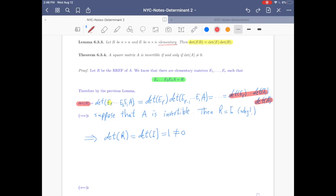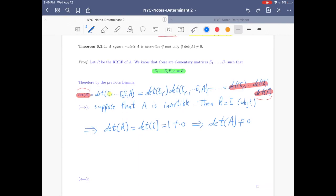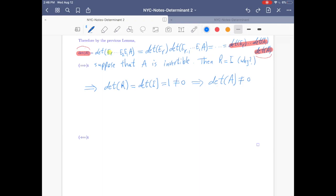cannot be zero as well. So if this is not zero, then this is not zero. That's why the determinant of A cannot be zero. So we showed if A is invertible, then det(A) is not zero.